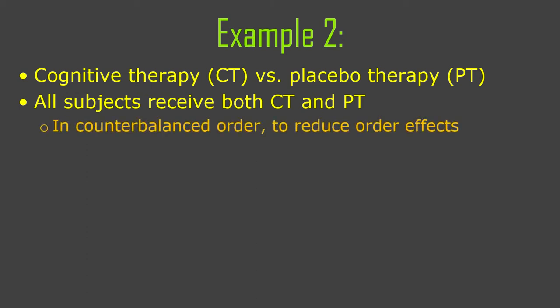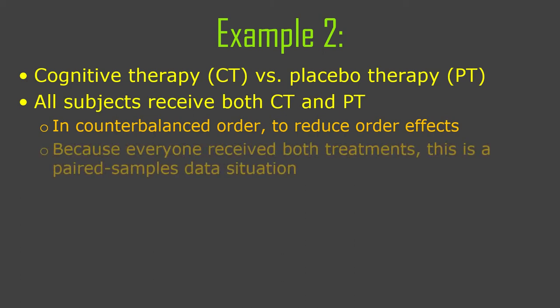If you're going to have all participants receive both treatments, it's a good idea to do counterbalancing of the order. Some people would get cognitive therapy first, and some people would get placebo therapy first, randomly assigned, so that if there's any order effect — maybe whatever comes second had the most effect — counterbalancing would have the same number of first and second people for cognitive therapy as for placebo therapy. Therefore the averages would cancel each other out for the order effects, and you'd be left with a good comparison of the effectiveness of cognitive and placebo therapy. That's a research design issue, not so much stats.